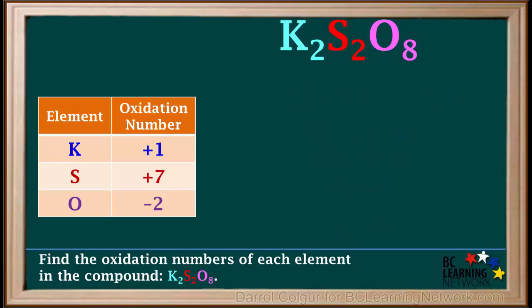So to summarize, we can say that the oxidation number of K in this compound is positive 1. The oxidation number of S is positive 7, and the oxidation number of O is negative 2.